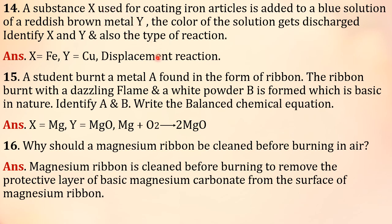Question 15: A student burnt a metal A found in the form of a ribbon. The ribbon burnt with a dazzling flame and a white powder B is formed which is basic in nature. Identify A and B. Write the balanced chemical equation. This is regarding the magnesium ribbon. So metal A is magnesium, which is available in the laboratory in the form of a ribbon. When this magnesium ribbon is burnt, it gives a white cloud, dazzling flame, and the powder formed is magnesium with oxygen gives magnesium oxide. So A is magnesium, and B is magnesium oxide. But here he has used X and Y, so in the previous example I used, now the same thing continued. This is A and this is B. Reaction is Mg + O2 gives 2MgO. This is white cloud, magnesium oxide.